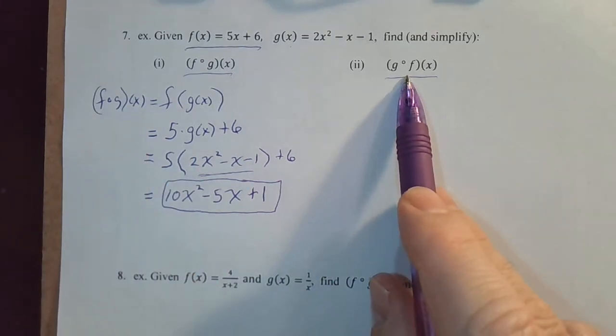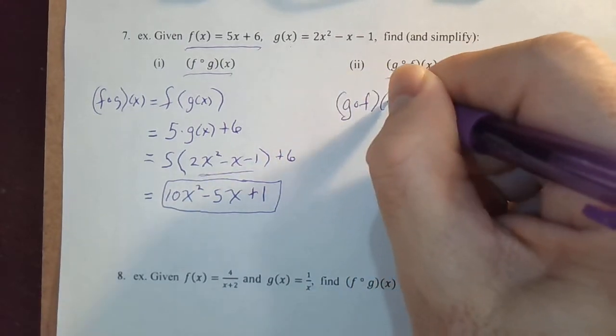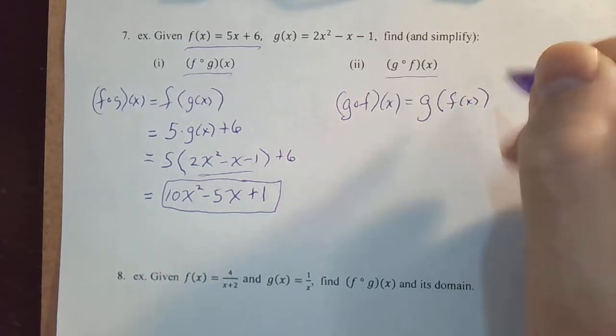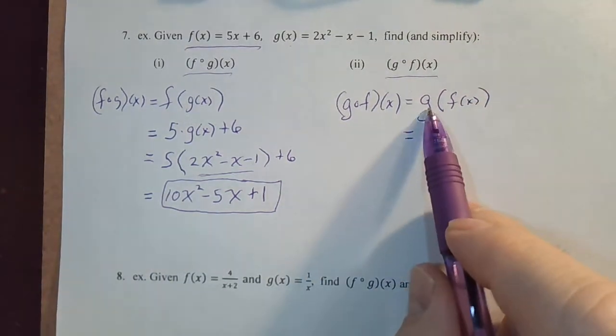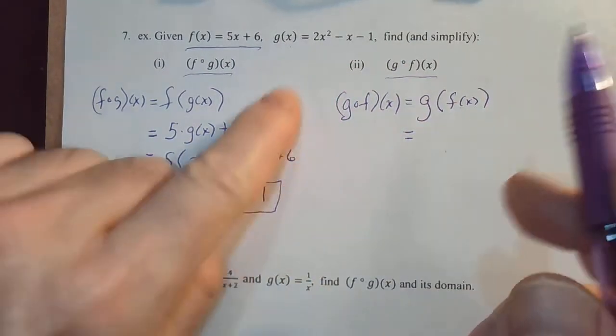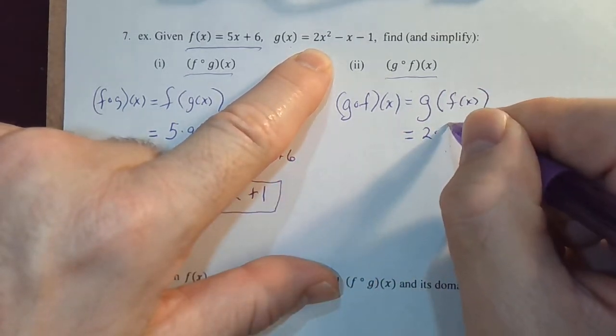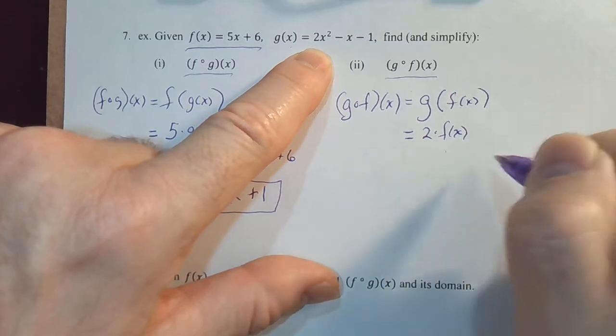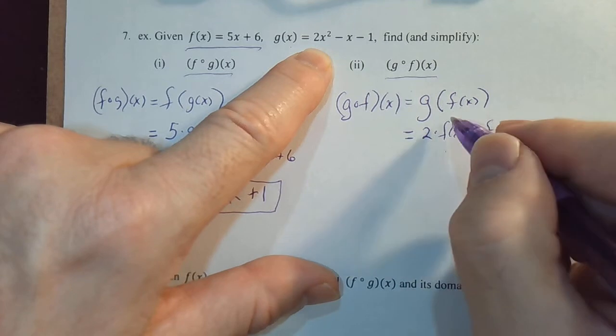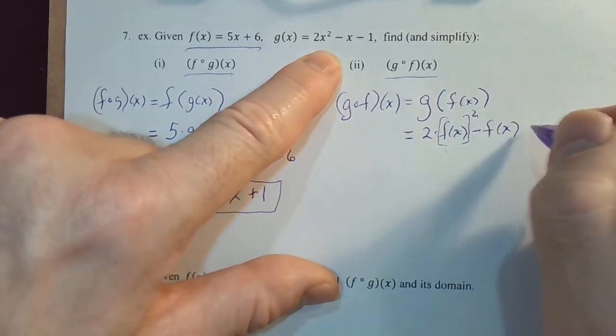Now let's do it the other direction. g of f, g composed with f of x is g of f of x. So what am I going to plug into this function g? I'm going to plug in f of x. So this is going to look like 2 times f of x squared minus f of x minus 1.